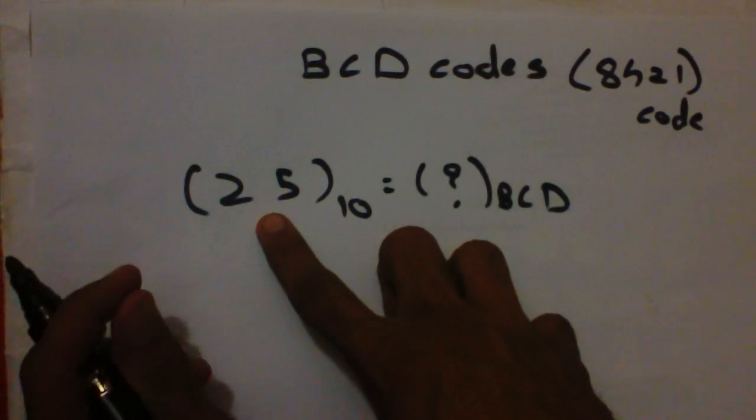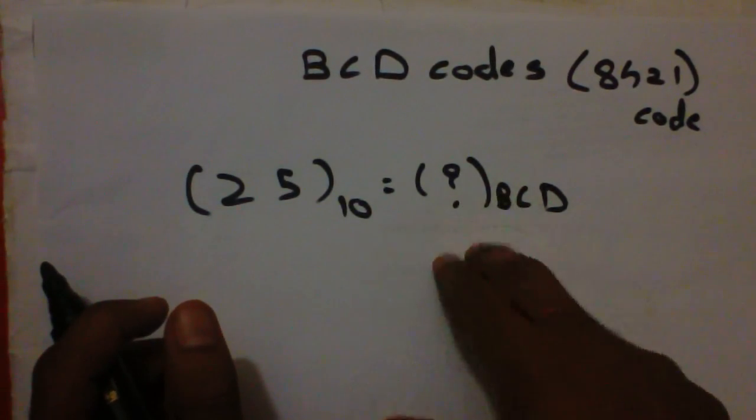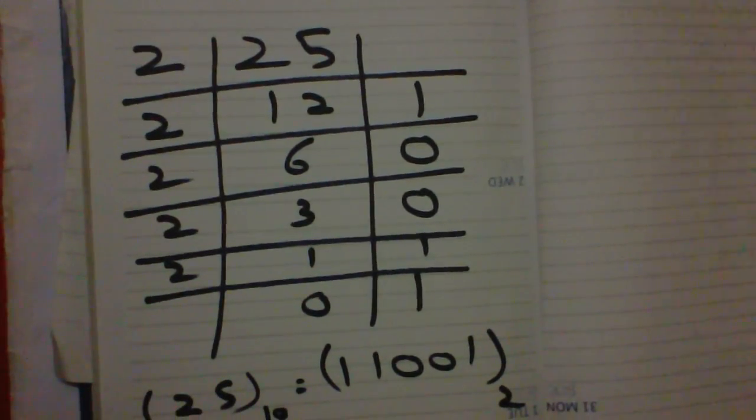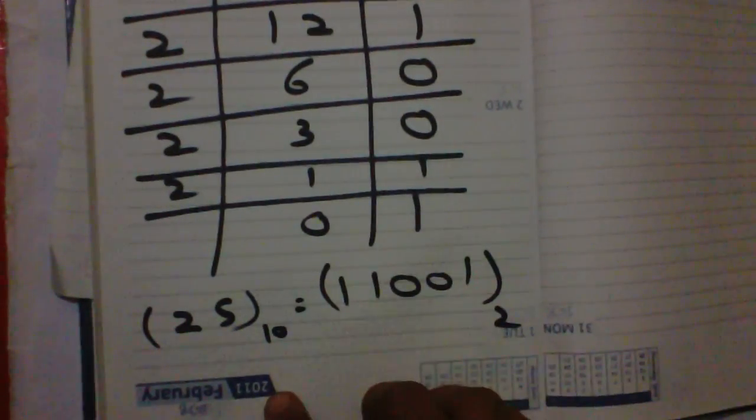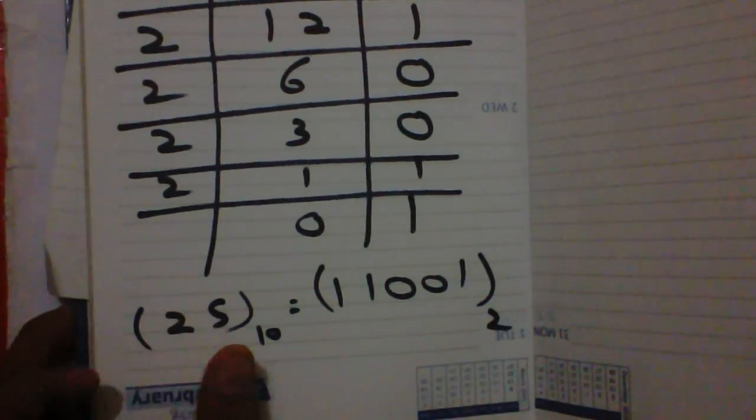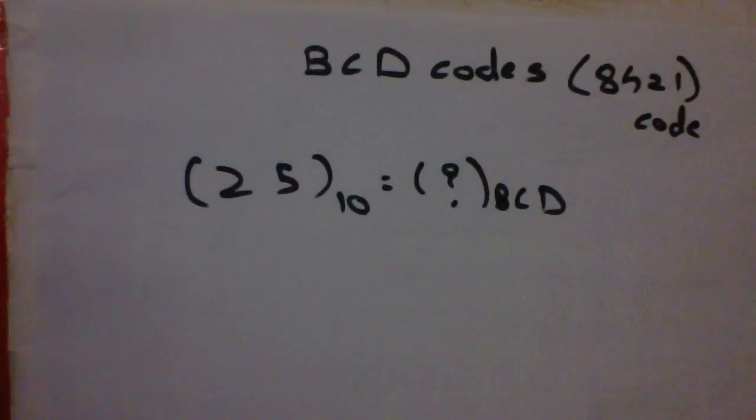Suppose if we want to calculate the binary number of 25, we will simply do this. We will take 25 as a whole number and we will do a binary to decimal conversion of this, and we will get 11001. But in this case...